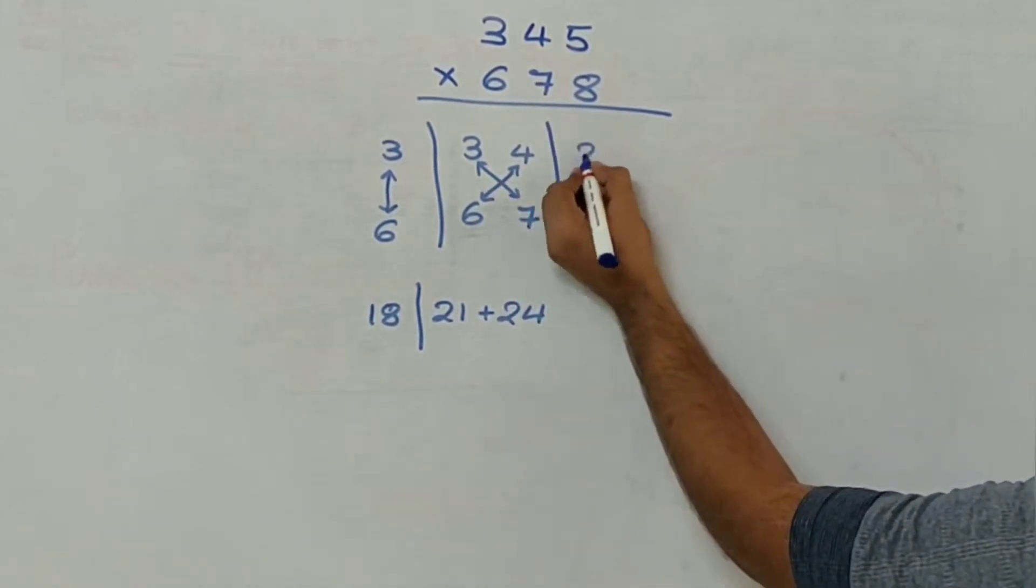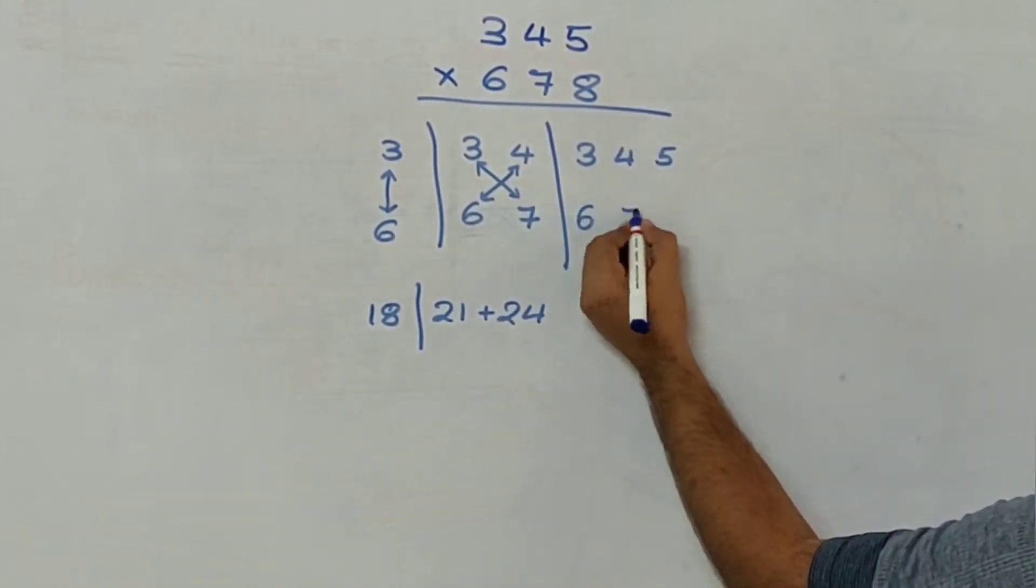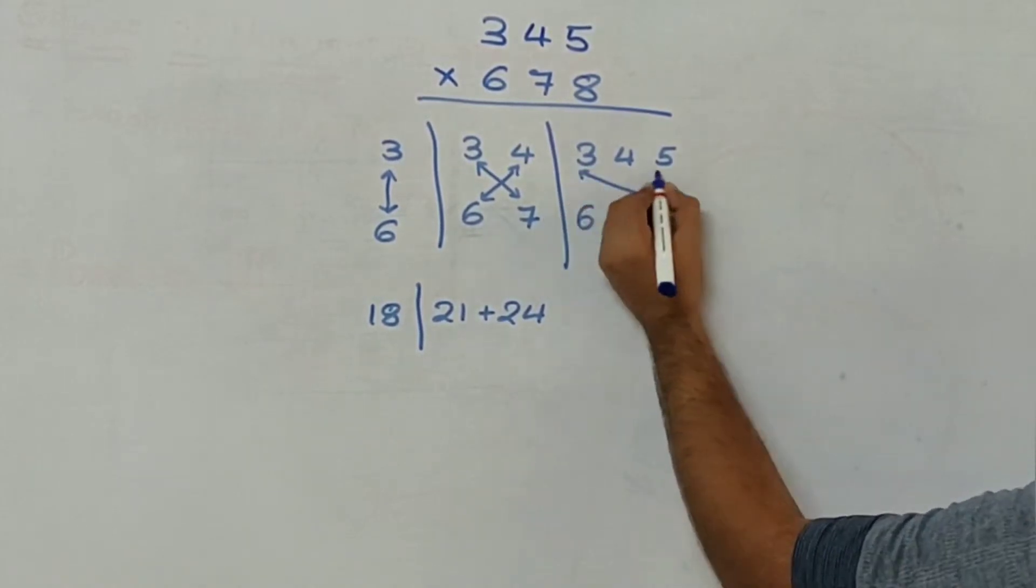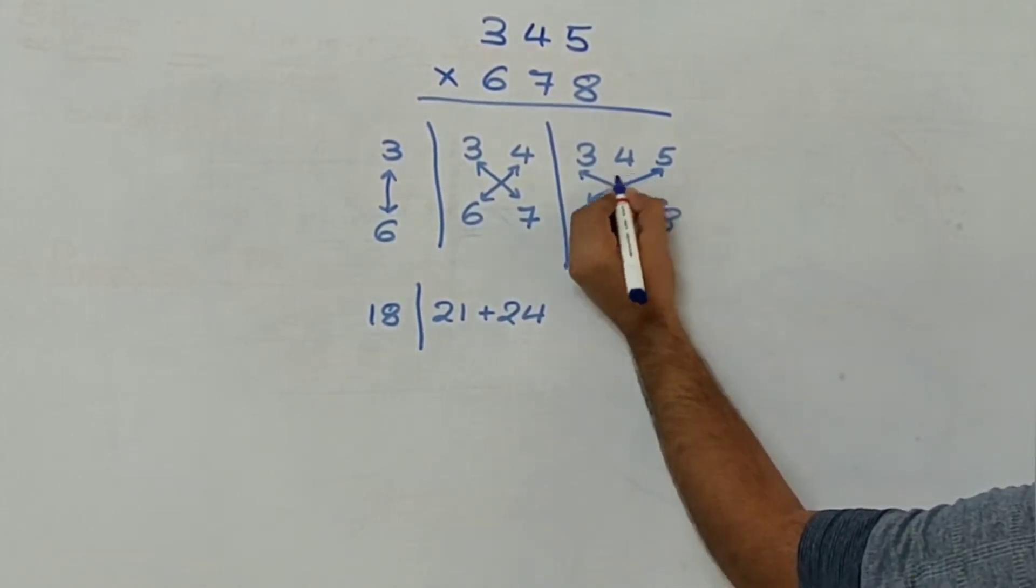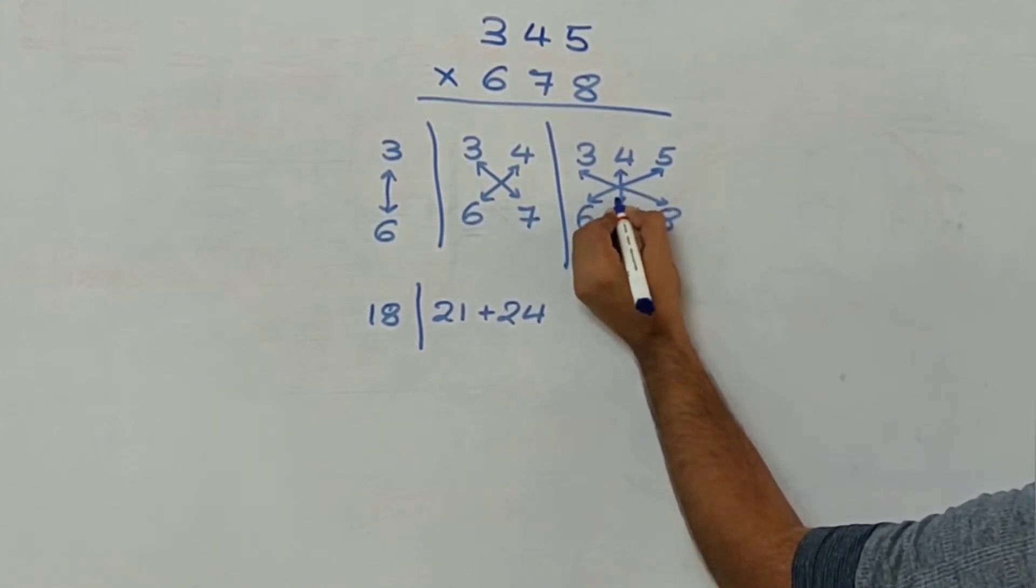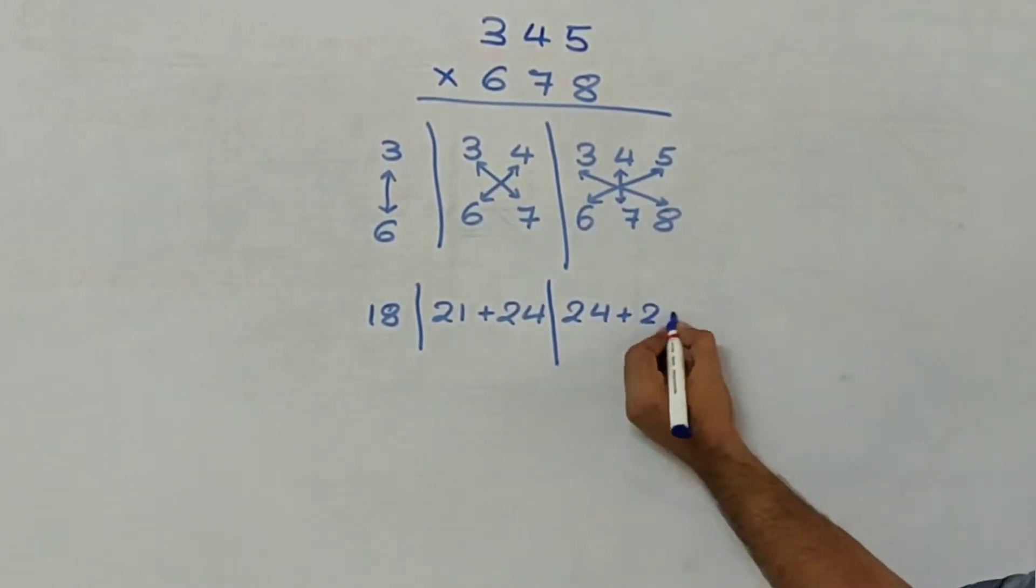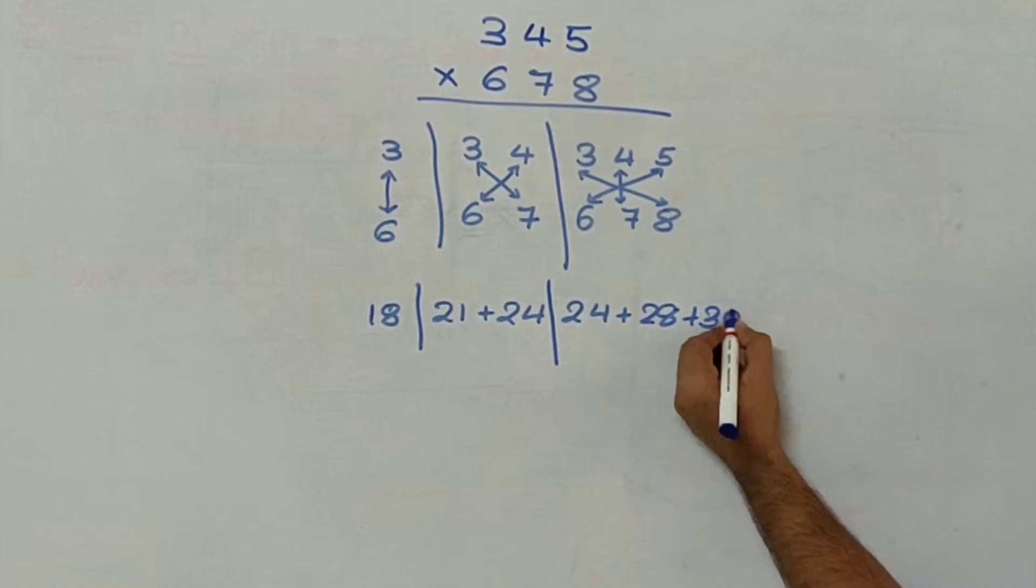Then we will have a group of 3, 4, 5, 6, 7, 8. Wherein I will multiply 3 and 8, I will multiply 6 and 5, I will multiply 7 and 4 and add them together. So 3 eights are 24, 4 sevens are 28, 6 fives are 30.